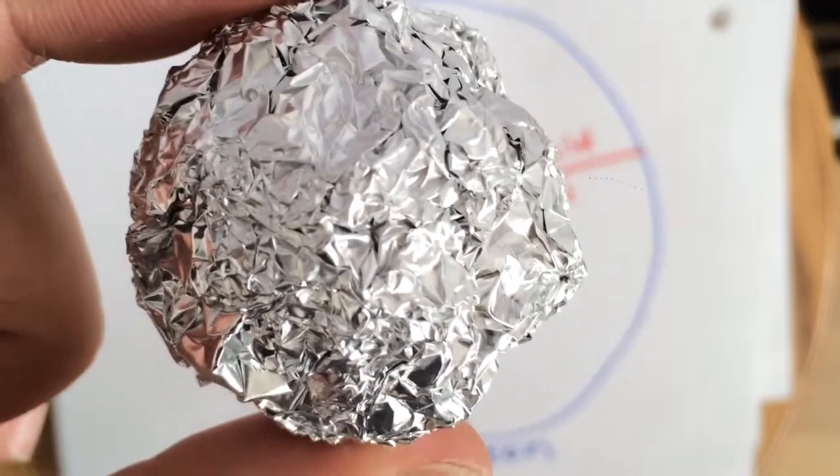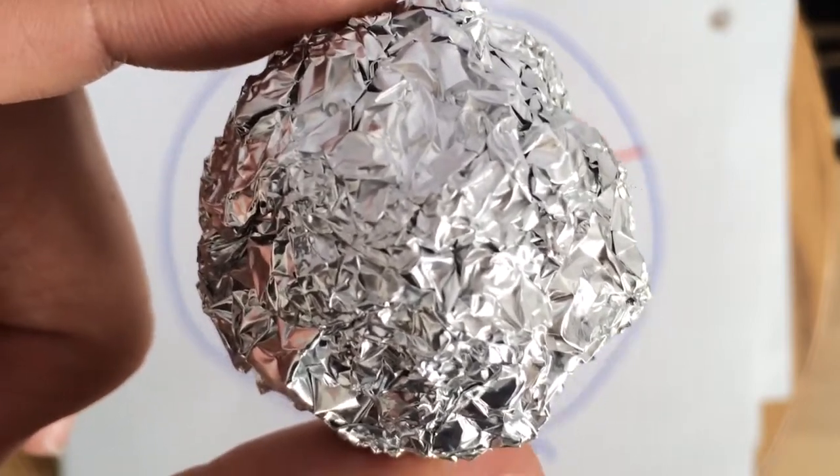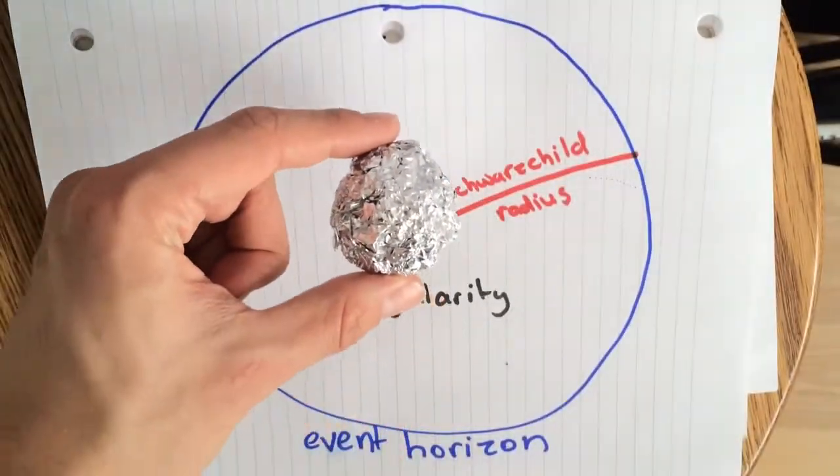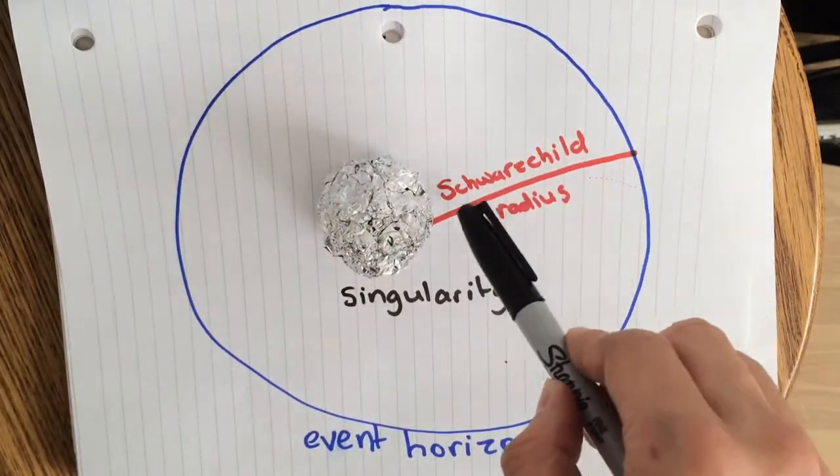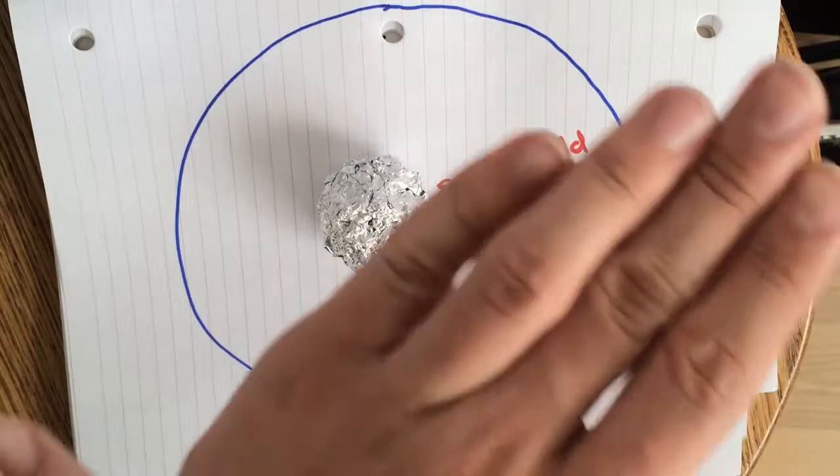What we do know from watching the surrounding area of these infinitely dense areas of space is that anything that crosses what's known as the event horizon, or the Schwarzschild radius, cannot escape. Not even light itself.